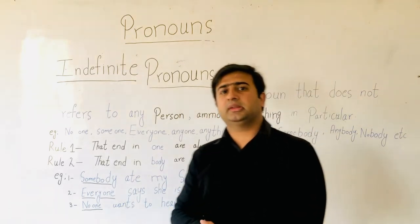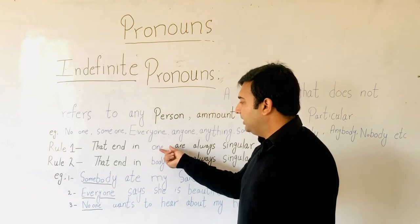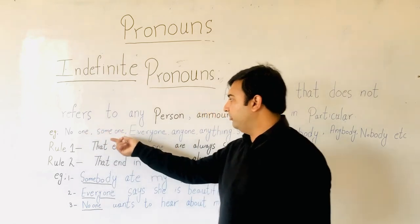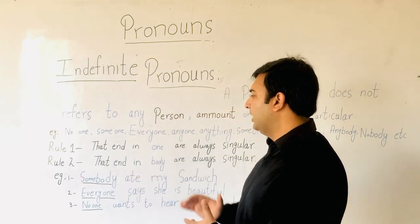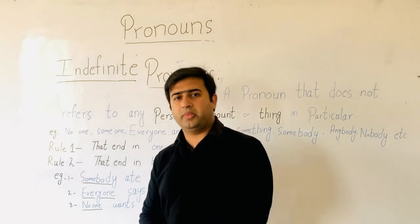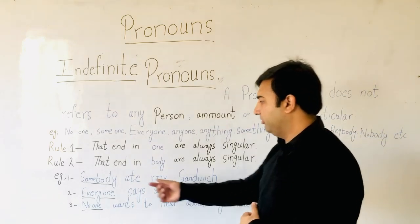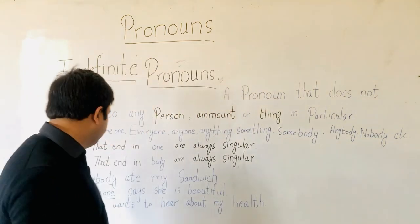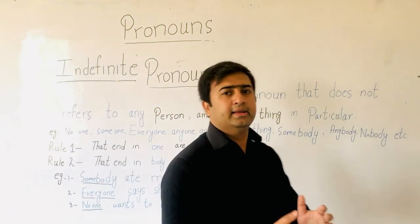When a word ends in 'one' or 'body,' we use it as singular. For example: 'Somebody ate my sandwich' — somebody is a singular statement. Second example: 'Everyone says he is beautiful' — everyone is a singular statement. Third example: 'No one wants to hear about my health' — no one is used with a singular statement.